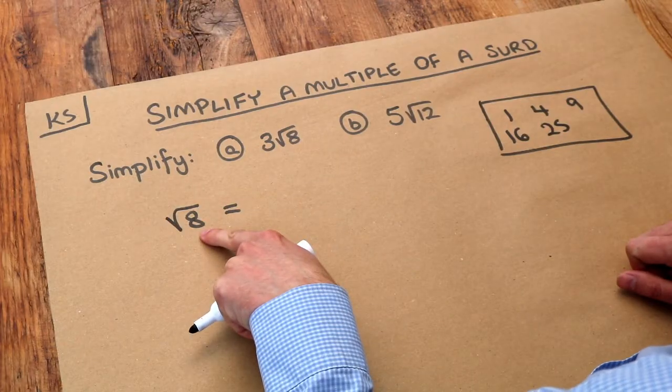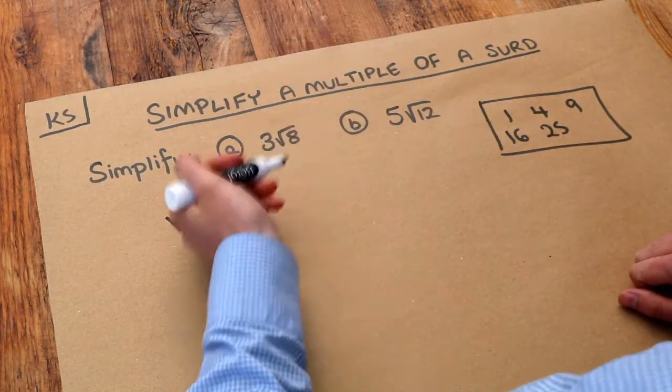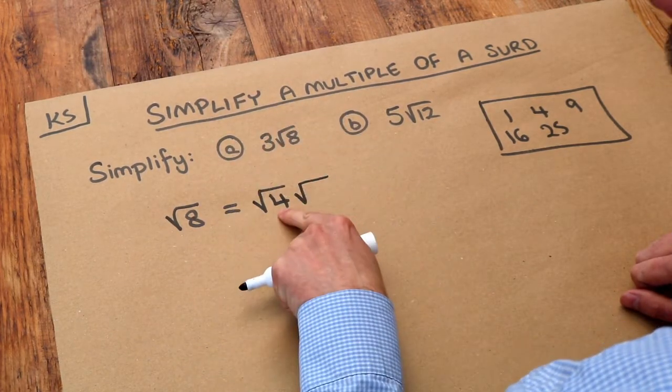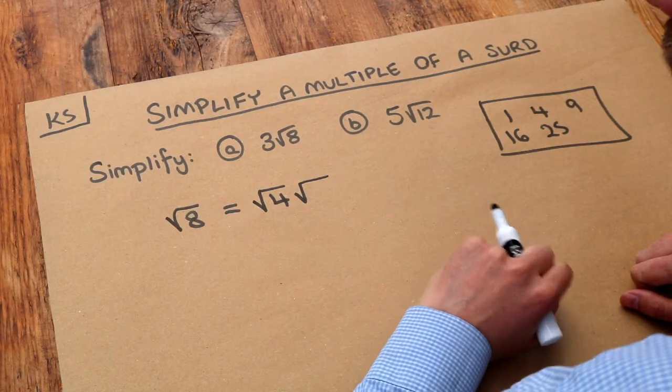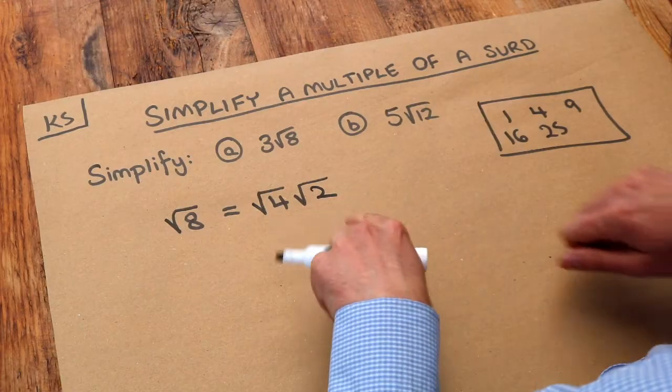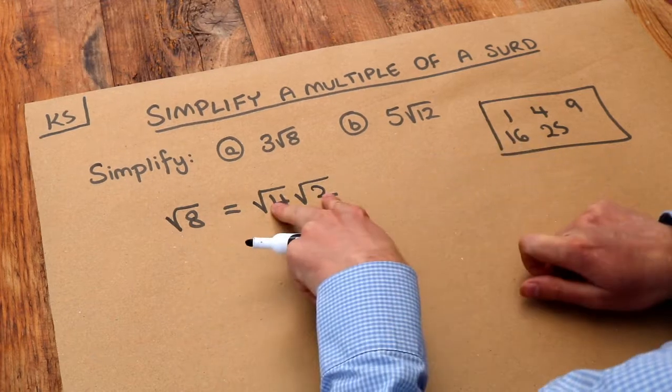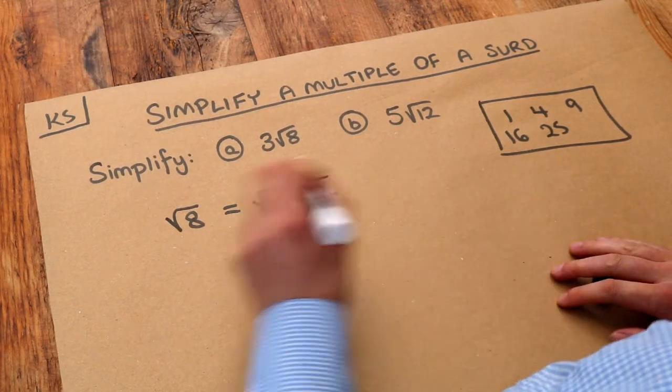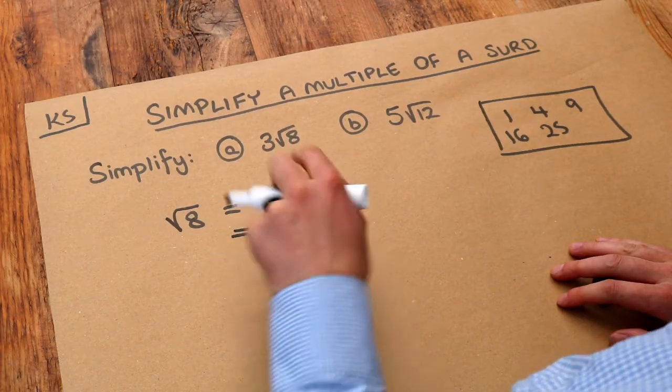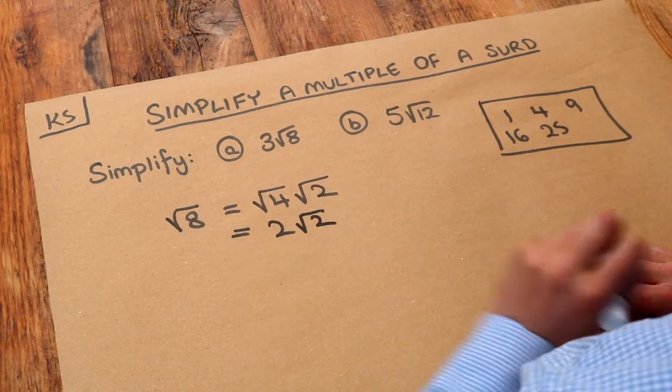What's the biggest square number that goes into eight? Well it's four isn't it? And you remember we write the square number first. We do root four and then we write root, and then think four times what would give you eight? It's two. And the reason this works is because when we multiply two surds together we just multiply the numbers together. So four times two is eight, so that would simplify to that. And then we simplify by saying what's the square root of four? It's two, so it's two times root two. So we can just write two root two.